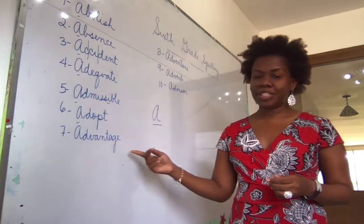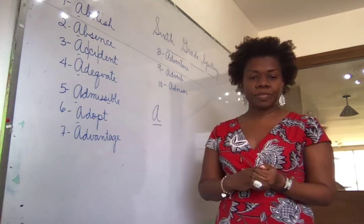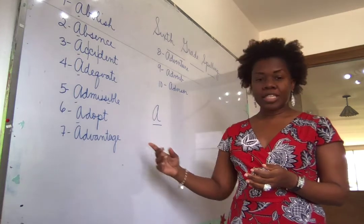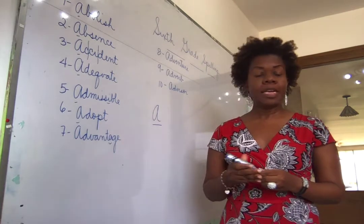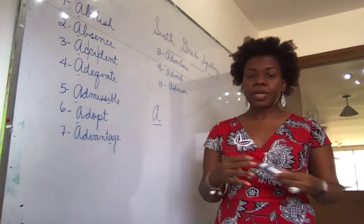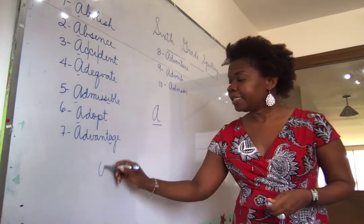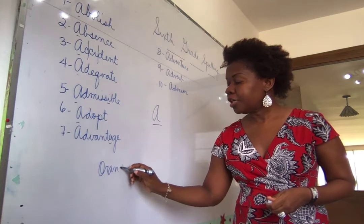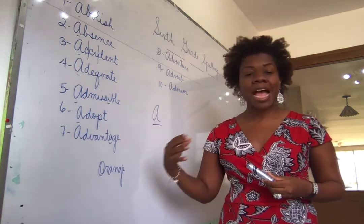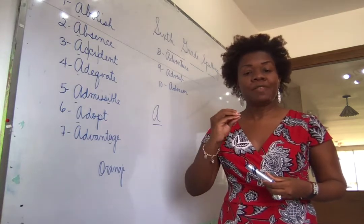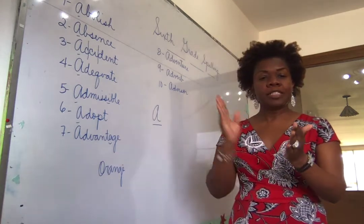And the next word is advantage — ad-van-tage. Now this 'a' is also very important. The natural tendency, and you might hear it with non-native speakers, is to say 'advantage' or like 'orange.' It's not 'orange' and it's not 'advantage' — it's advantage. Ad-van-tage and orange. Advantage.